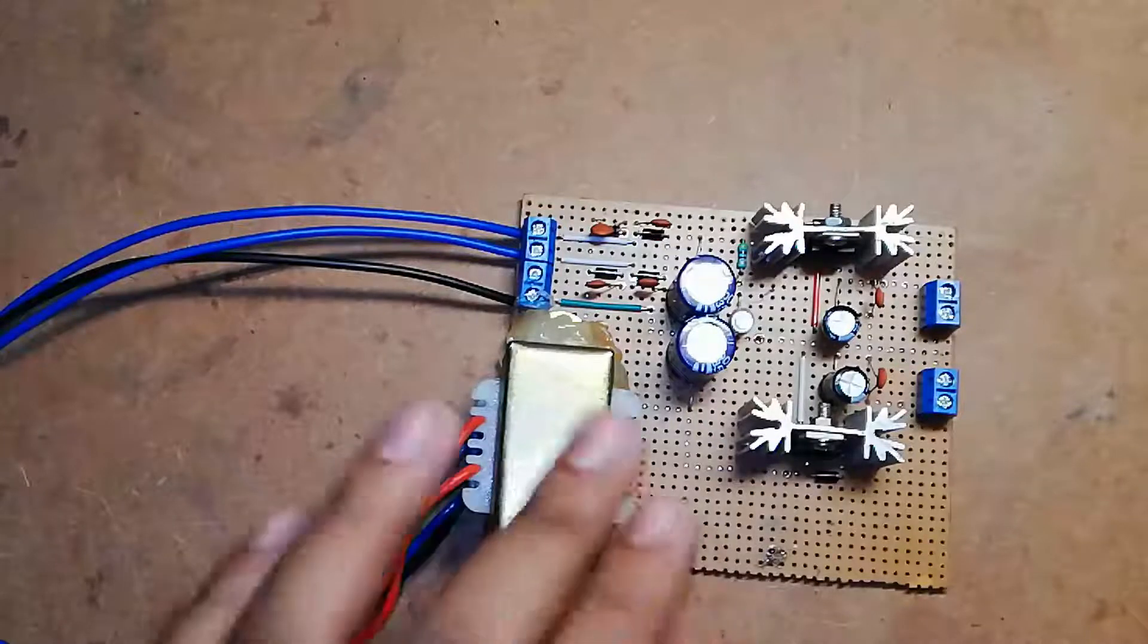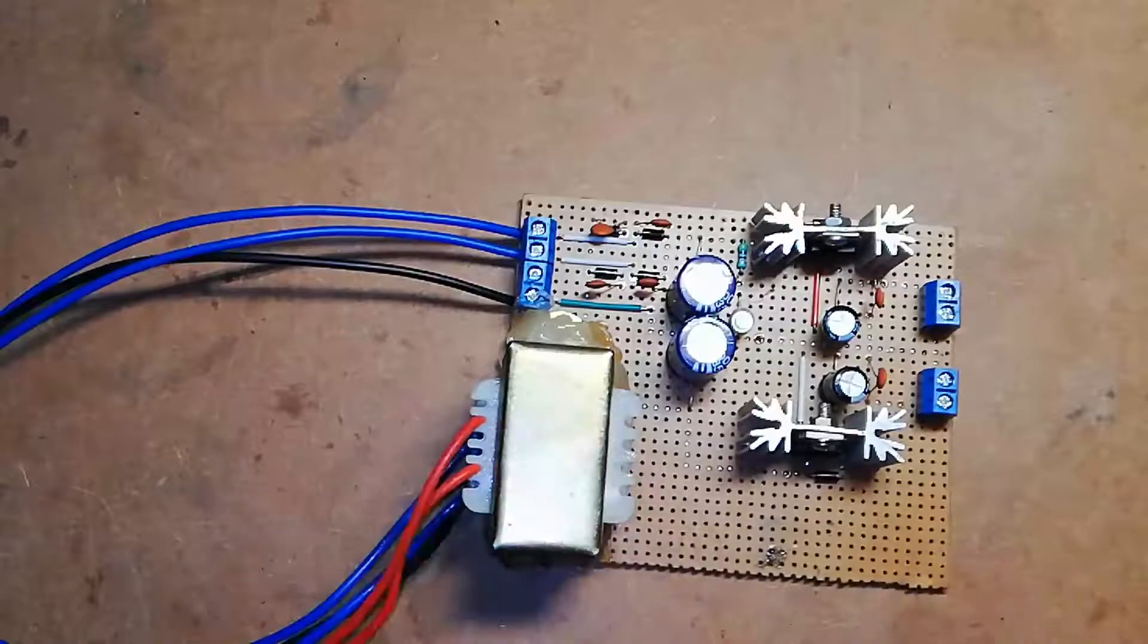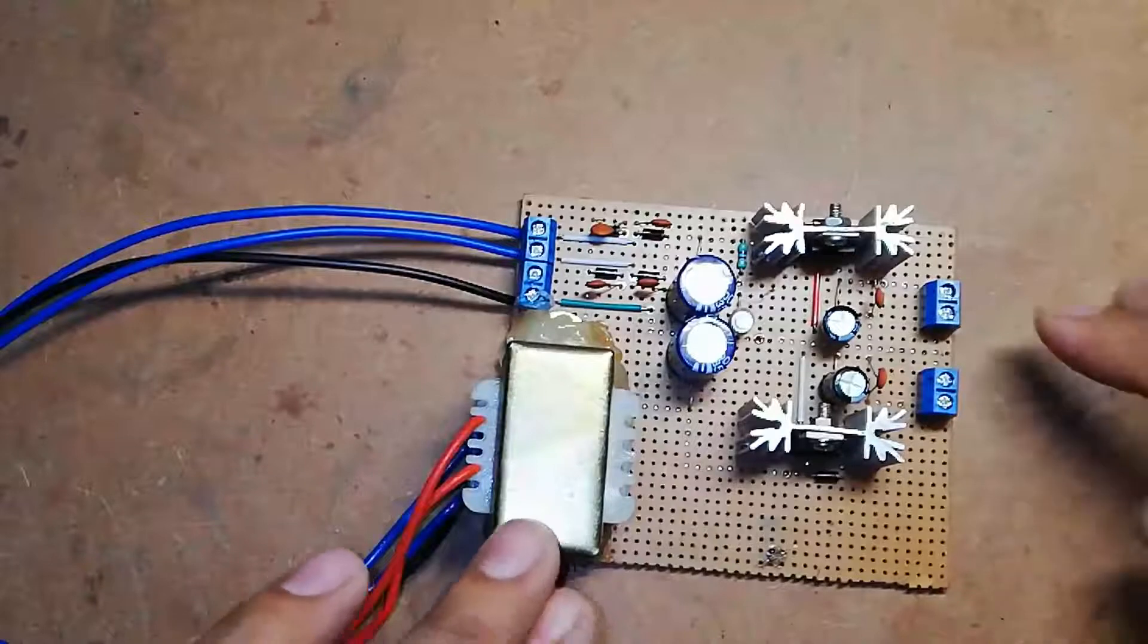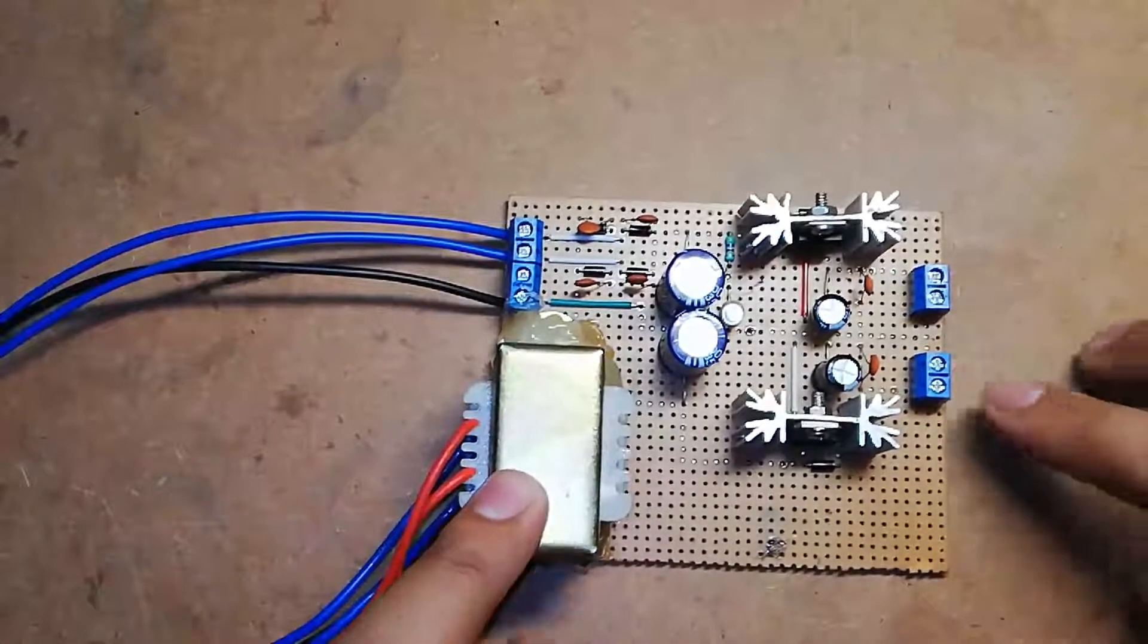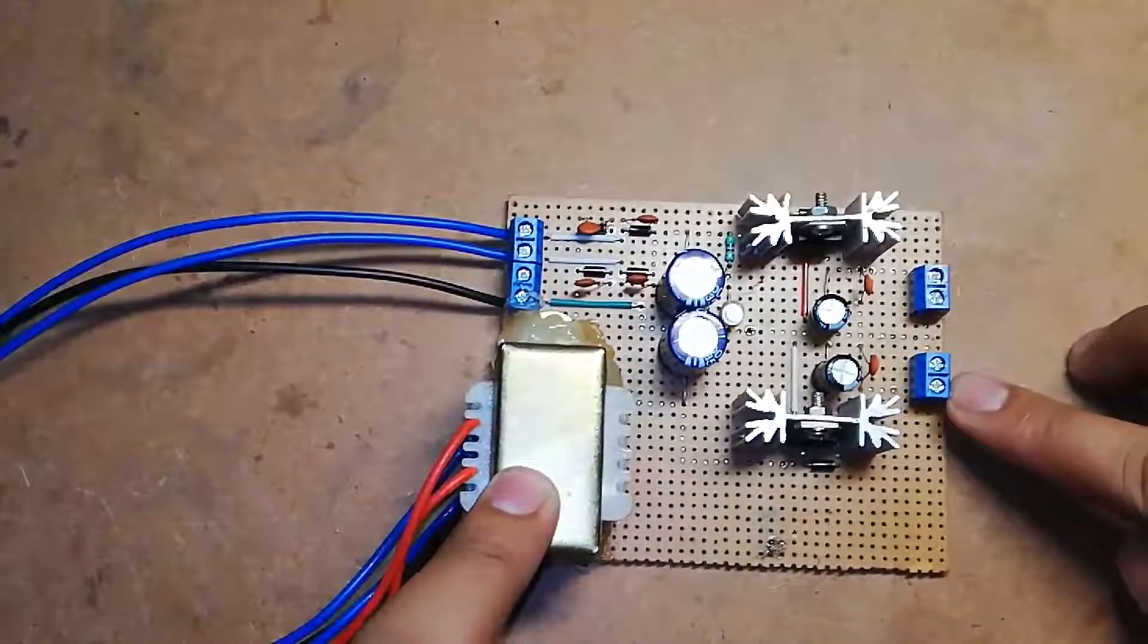To solve this type of issue, we came up with a noise-free dual polarity 12-volt power supply unit. From this terminal we get plus 12 volts and ground, whereas from this terminal we get ground and minus 12 volts.